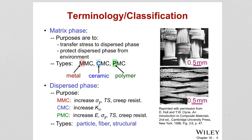The purpose of the dispersed phase depends on the composite type. In metal matrix composites, the goal is to increase yield strength, tensile strength, and creep resistance. For ceramic matrix composites, ceramics are brittle and have low fracture toughness, so the goal is to increase fracture toughness, K1C. For polymer matrix composites, polymers have low elastic modulus and low strength, so adding a dispersed phase increases stiffness, yield strength, tensile strength, and creep resistance.